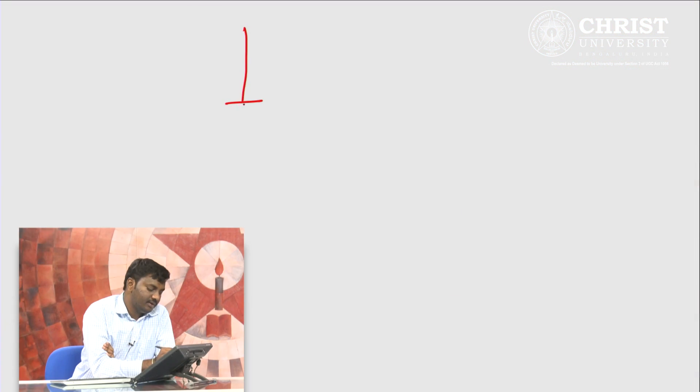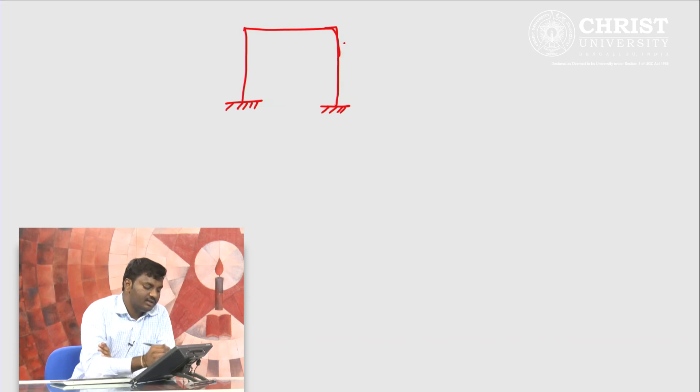Let us consider the example of a rigid jointed frame. We saw how to find out static indeterminacy of a pin jointed frame. Now let us consider a portal frame. A portal frame is an interconnected system of beams and columns. I want to find out the static indeterminacy of this portal frame. Let this portal frame be subjected to any type of loading.